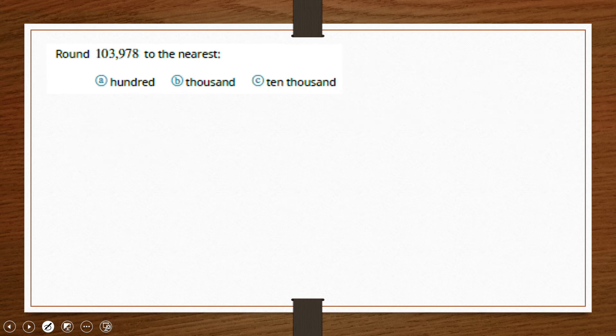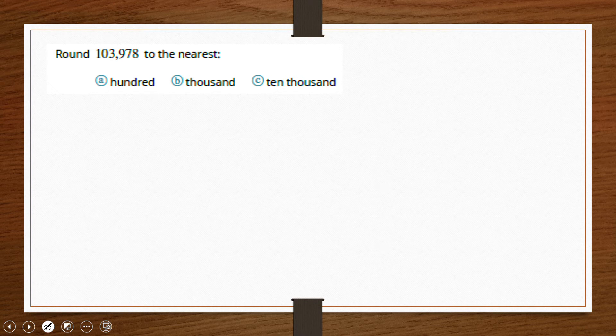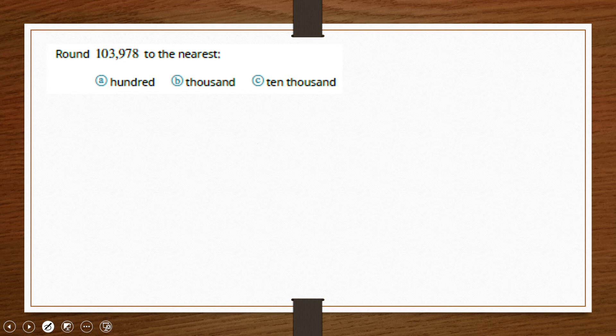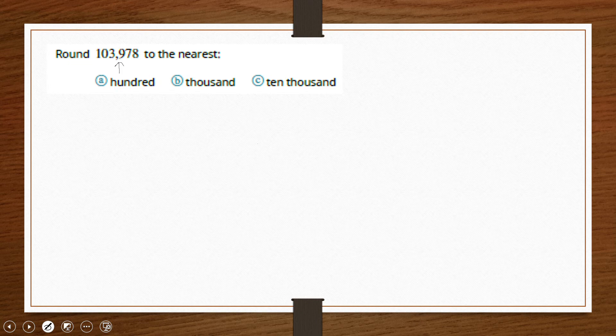Here's another example where we are asked to round to the 100,000 and 10,000 place. So for the hundreds place, this is the place value we're interested in. We look to the place value to the right.